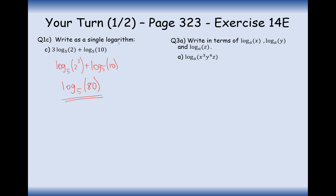Writing log base A of x cubed times y to the 4 times z in terms of log x, log y, and log z: first split these up using the addition law into log base A of x cubed plus log base A of y to the power of 4 plus log base A of z. Then bring the powers out to the front, leaving 3 log base A of x plus 4 log base A of y plus log base A of z.